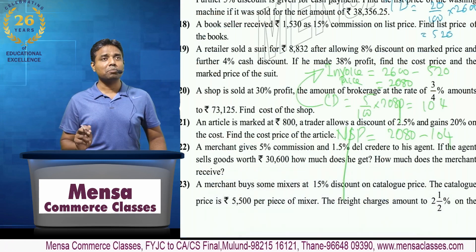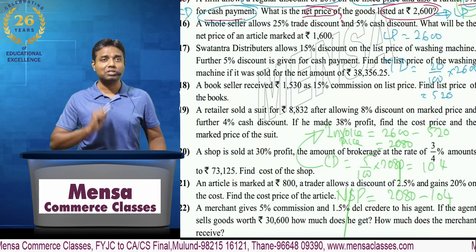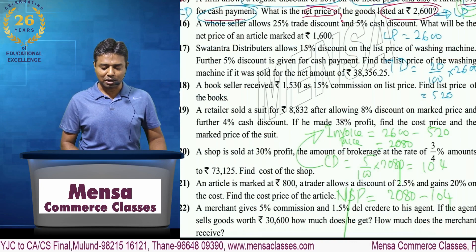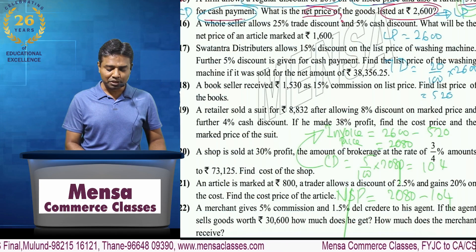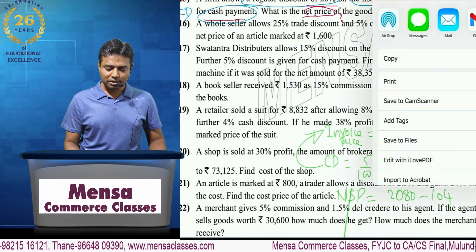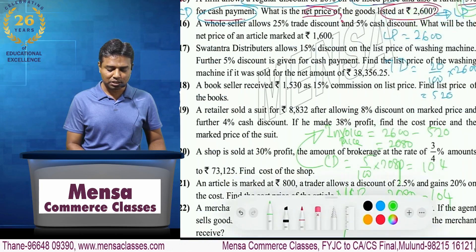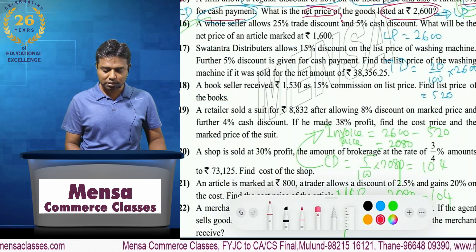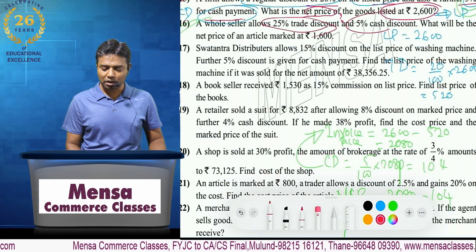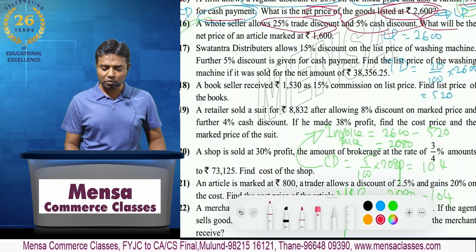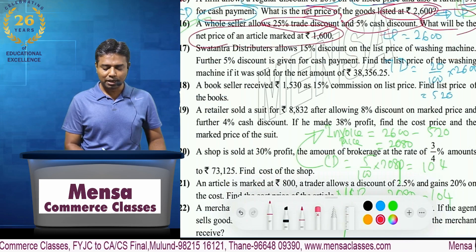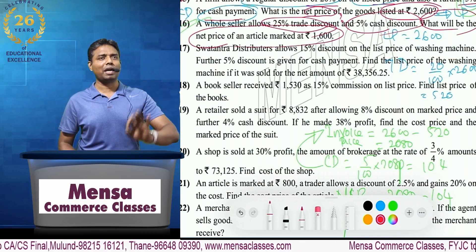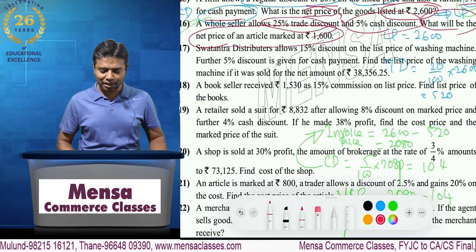I hope you are clear on that. Kuch questions hain jahan hum ko reverse jana padta hai. Question number 16: the wholesaler allows a discount of 25% trade discount, 5% cash discount — what will be the net price marked at 1,600? Net price 1,600 hai — trade discount minus karo, cash discount minus karo, net selling price. Madhah exactly same question hai.